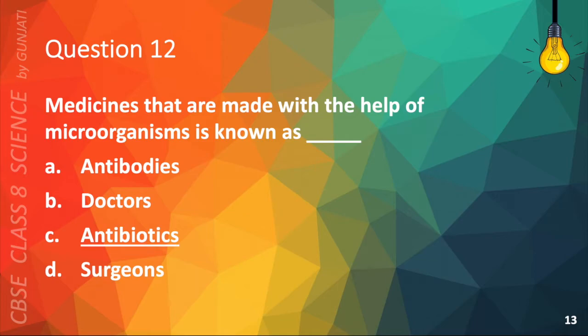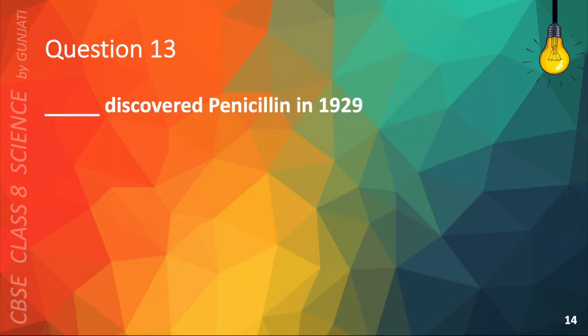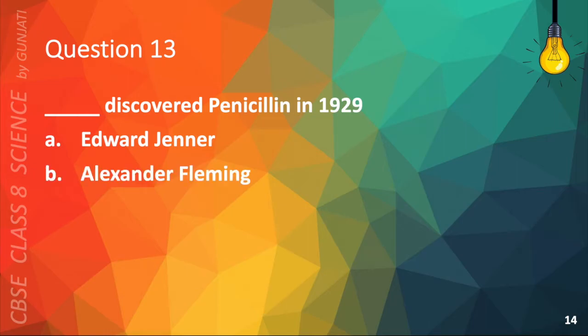Question 13. Blank discovered penicillin in 1929. A. Edward Jenner, B. Alexander Fleming, C. Rod Coley, or D. Star Wars.